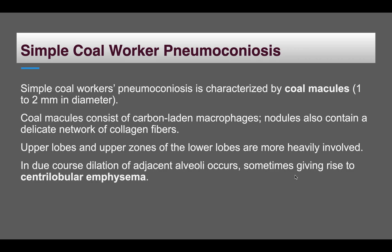In simple coal worker's pneumoconiosis, there is the beginning of mild fibrosis. Coal macules are present, consisting of carbon-laden macrophages with a slight increase in collagen fibers. The upper lobes and upper zones of the lower lobes are more involved. If this continues, it can also lead to emphysema. The key point is that fibrosis is very minimal.